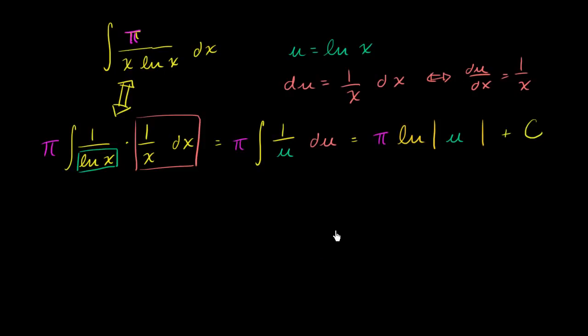And we're almost done. We just have to unsubstitute for the u. u is equal to natural log of x. So we end up with this kind of neat looking expression. This entire indefinite integral is now equal to π times the natural log of the absolute value of the natural log of x, and then we have this plus c right over here.